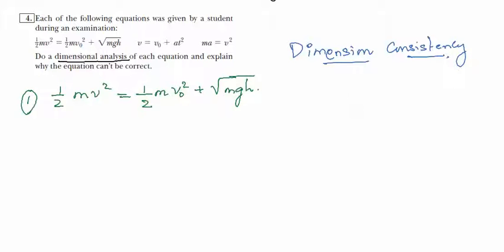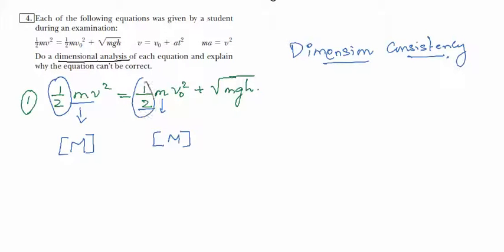The dimension of mass is simply mass. Numbers do not have any dimension, so the one-half on both sides of the equation has no dimension and we can leave those out. Then we come back to the signs and consider the velocity term.